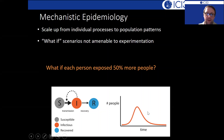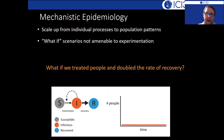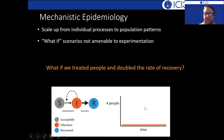Or, what happens if we treated people and doubled the rate of recovery? In that case we might be able to prevent the epidemic from ever happening in the first place.